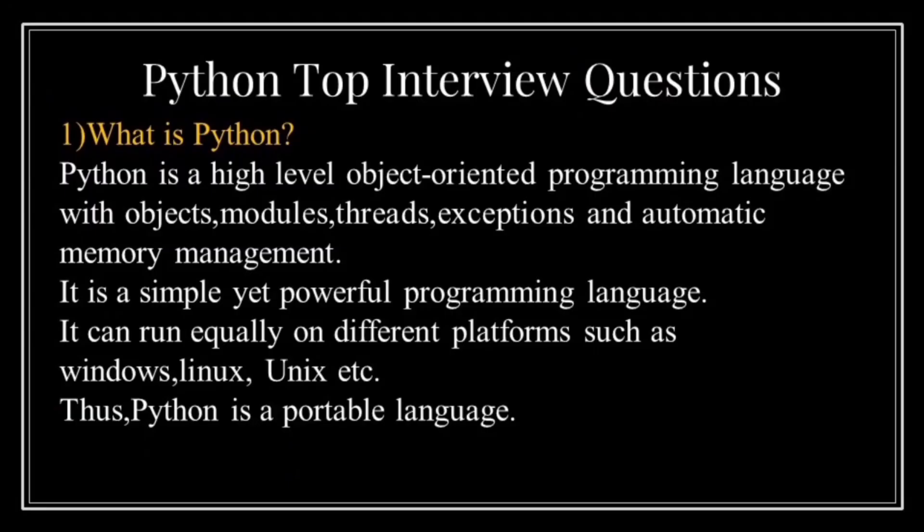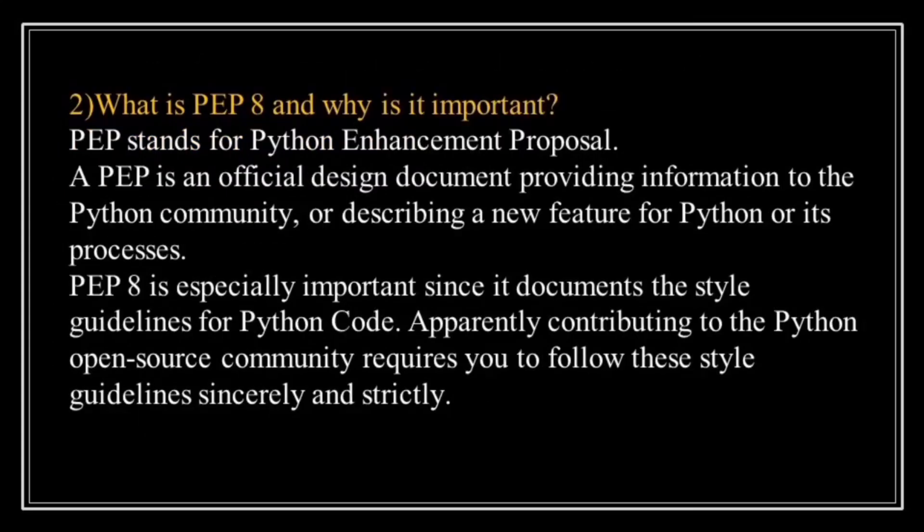What is Python? Python is a high-level, object-oriented programming language with objects, modules, threads, exceptions and automatic memory management. It is a simple but powerful programming language. It can run equally on different platforms such as Windows, Linux, Unix and many more. Overall, we can say that Python is a portable language.